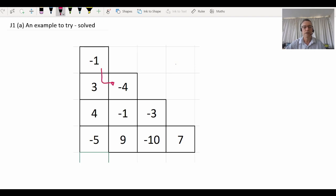Did you get this answer? Target number of seven. Let's just check quickly. Negative one take away three is negative four. Three subtract four is negative one. Four subtract negative five, careful, that becomes four plus five becomes nine. Negative four take away negative one becomes negative four plus one, which gives us negative three. This becomes negative ten. Negative three subtract negative ten equals negative three plus ten, giving us the final answer of seven. Did you get a seven? If you did, you're ready to do J1 part A.